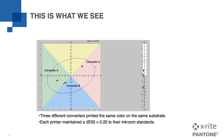In this case we had three different converters, all targeting the same color, but they ended up in different directions. They were all pretty close to the original, but in different directions from the original standard. They established their own press standards based on what the ink room could achieve, and their average delta E to their own standard was quite low — they stayed very tight to their own standards. However, when comparing across all three suppliers, they had differences of up to 3 delta E and over. This was not acceptable.